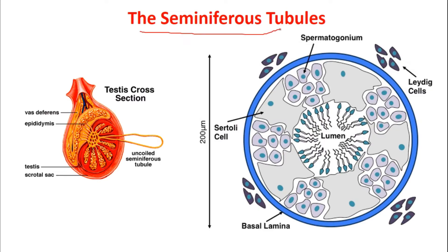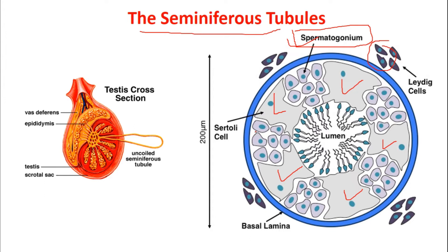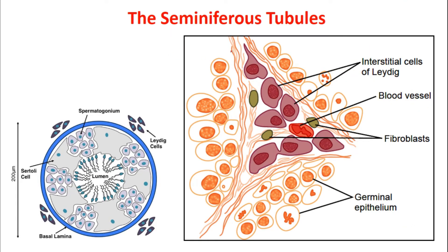Now looking at the cut portion of the seminiferous tubule: inside, you are seeing the Sertoli cells. The cells present near the basal lamina are known as spermatogonia. Outside the seminiferous tubule, the cells present are known as Leydig cells. The two main cells present inside the testis are the Sertoli cell and the Leydig cell. The structures in between the coiled seminiferous tubules occupy the interstitial space where Leydig cells are present, along with blood vessels and fibroblasts.